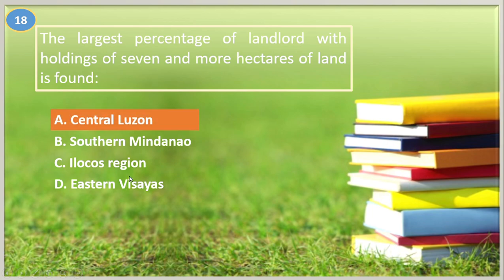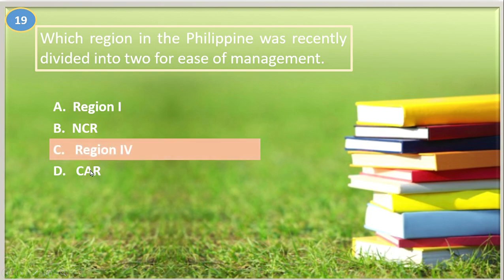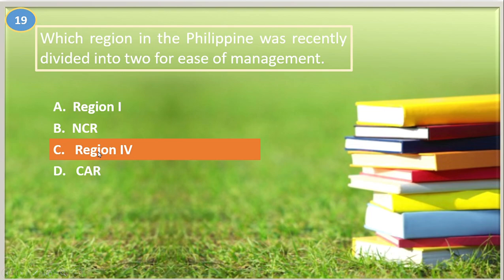Number nineteen. Which region in the Philippines was recently divided into two for ease of management? A. Region 1, B. NCR, C. Region 4, D. CAR. The answer is letter C, Region 4. It was divided — Calabarzon and Mimaropa were separated in 2002 by virtue of Executive Order No. 103.